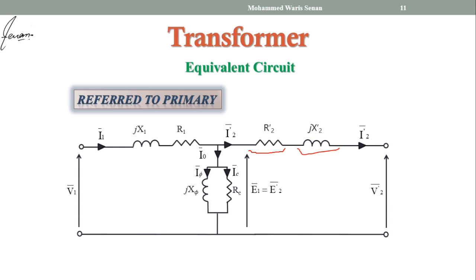Similarly, the equivalent circuit diagram referred to secondary side can be drawn by applying a dash on all primary quantities: V1 dash, I1 dash, X1 dash, R1 dash, I0 dash, Iφ dash, Ic dash, Xφ dash, RC dash, and E1 dash. You can draw this on your own.